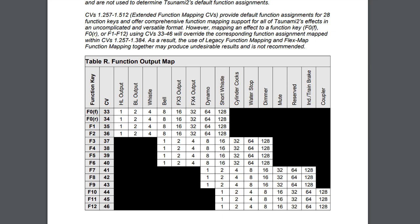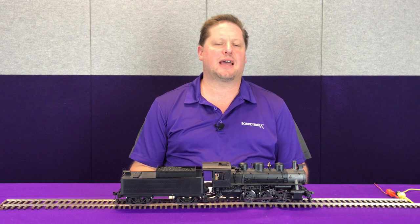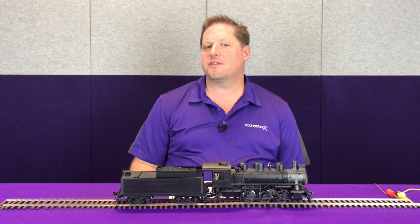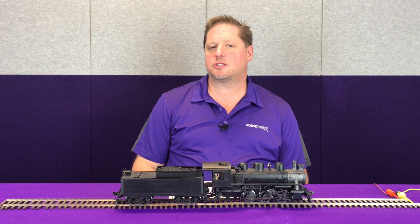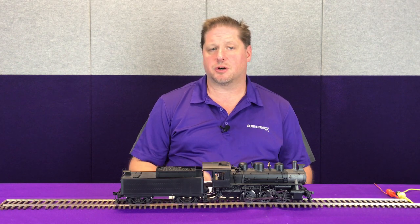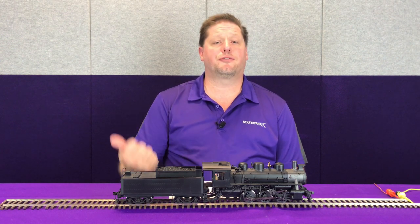The key limitation here is not every function is available to activate with F0 forward or F0 reverse like it is with the FlexMap function mapping. Therefore, you have to find a limitation and decide what you can compromise with in those limits. The other thing to keep in mind is that when CVs 33 through 46 are set to a non-zero value — they're all defaulted at 0 — when they're set to a non-zero value, they will override the FlexMap.